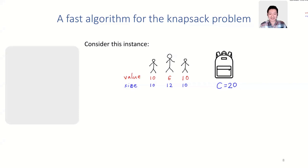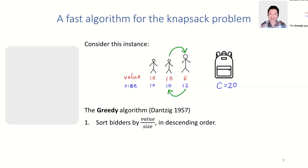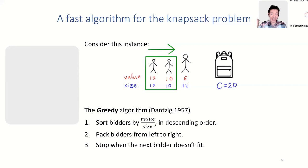Here is a fast algorithm: consider an instance with two small bidders with values of 10 and sizes of 10, and a big bidder with value 6 and size 12, with knapsack capacity 20. The greedy algorithm, proposed by Dantzig in 1957, works as follows: first, sort bidders by value divided by size in descending order. The little bidders have value-over-size of 1, so they come first; the big bidder has value-over-size of one-half, so he comes last. Then we greedily pack bidders from left to right until the next bidder doesn't fit, and we stop.